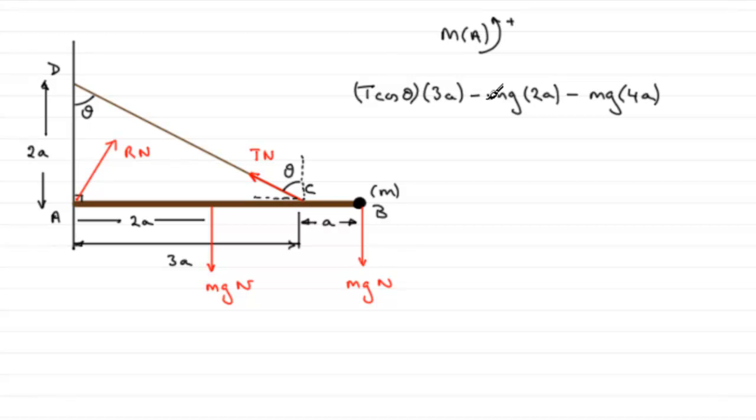This is the resultant moment, but because the rod is in equilibrium, it must equal 0. So we need to solve this equation. We've got T times 3a. In fact, a is in every term here, so we could cancel through by a. We've got 3T times cosine of theta.